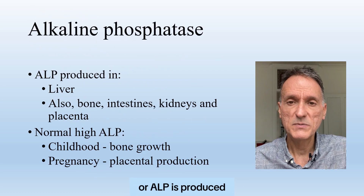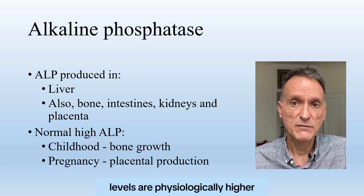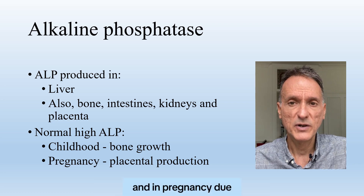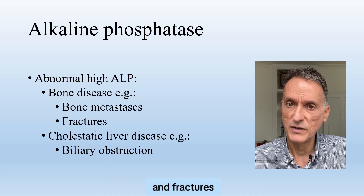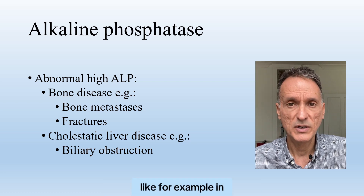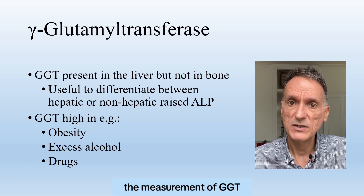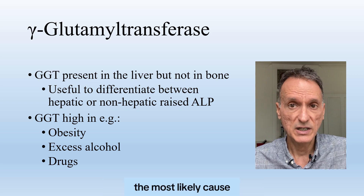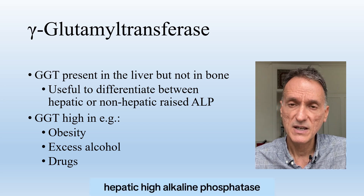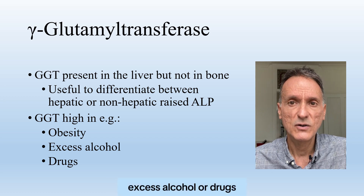Alkaline phosphatase, or ALP, is produced mainly in the liver, but is also found in bone, intestines, kidneys, and placenta. Levels are physiologically higher in childhood because of bone growth, and in pregnancy due to placental production. High levels can be due to bone disease, for example bone metastases and fractures, and cholestatic liver disease, like biliary obstruction. Gamma-glutamyl transferase, or gamma-GT, is present in the liver but not in bone, and therefore when ALP is high, the measurement of gamma-GT can indicate whether the alkaline phosphatase is of hepatic or non-hepatic origin. The most likely cause of non-hepatic high alkaline phosphatase in someone asymptomatic is vitamin D deficiency. A high gamma-GT can also be due to obesity, excess alcohol, or drugs.